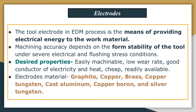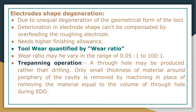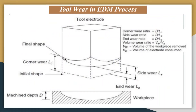Now let us look at tool wear. Tool wear is quantified by the wear ratio, which may vary in the range of 0.05:1 to 100:1. Different kinds of tool wear occur: corner wear, end wear, and side wear. You can calculate the corner wear ratio using a mathematical formula, and similarly find the side wear ratio, end wear ratio, and volume wear ratio.